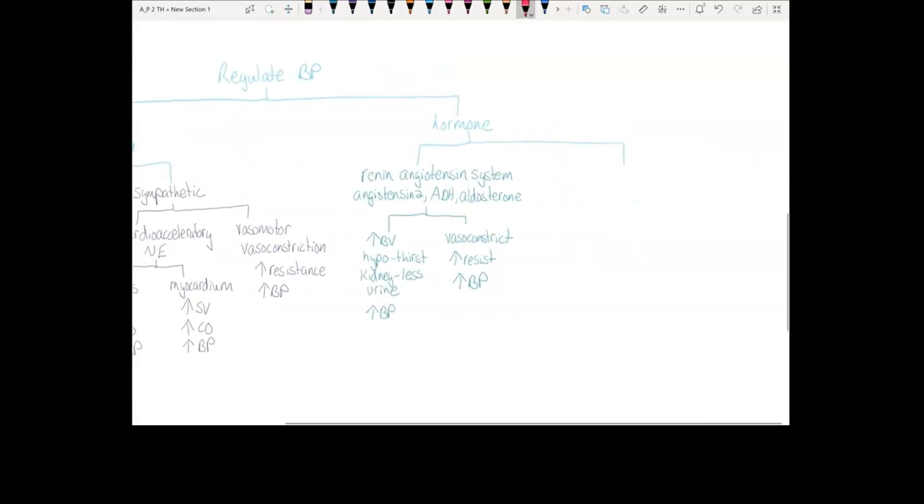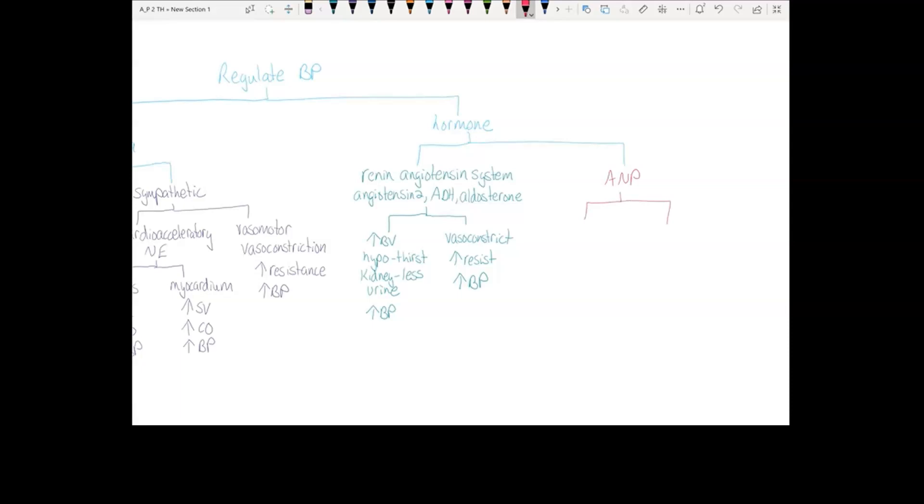Our other hormone is atrial natriuretic peptide, or ANP. This hormone reduces blood pressure. It acts on the kidney to make more urine. This reduces blood volume, which reduces blood pressure. It also acts on the blood vessels to cause vasodilation. This reduces resistance, which reduces blood pressure.